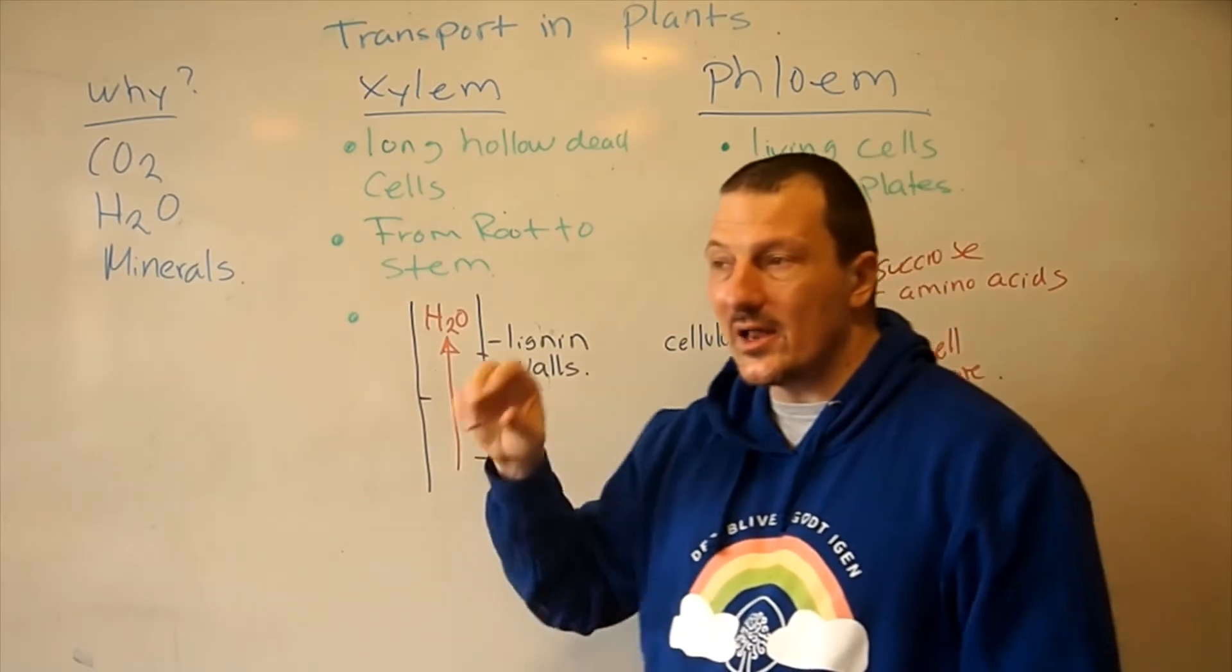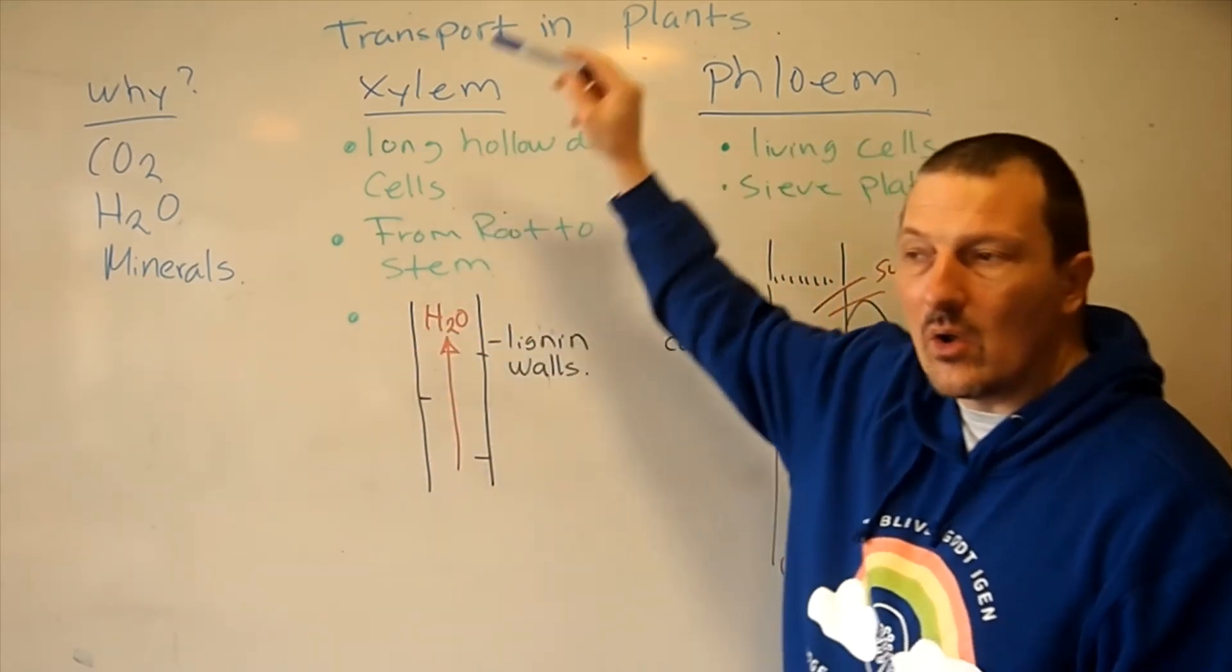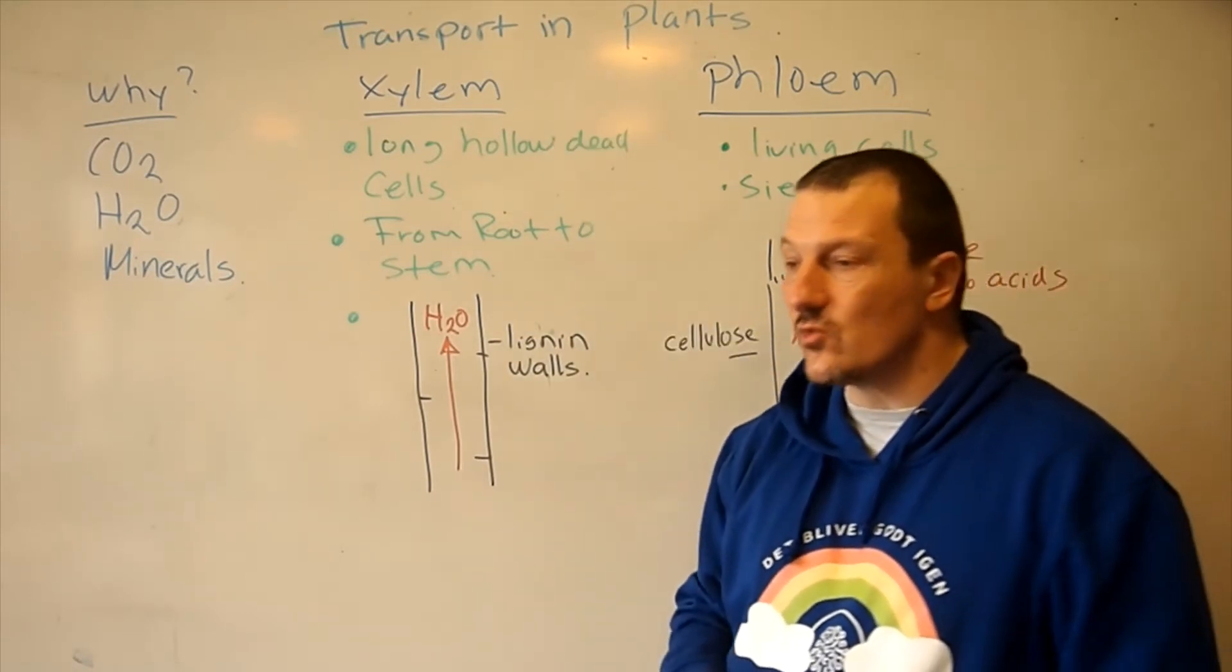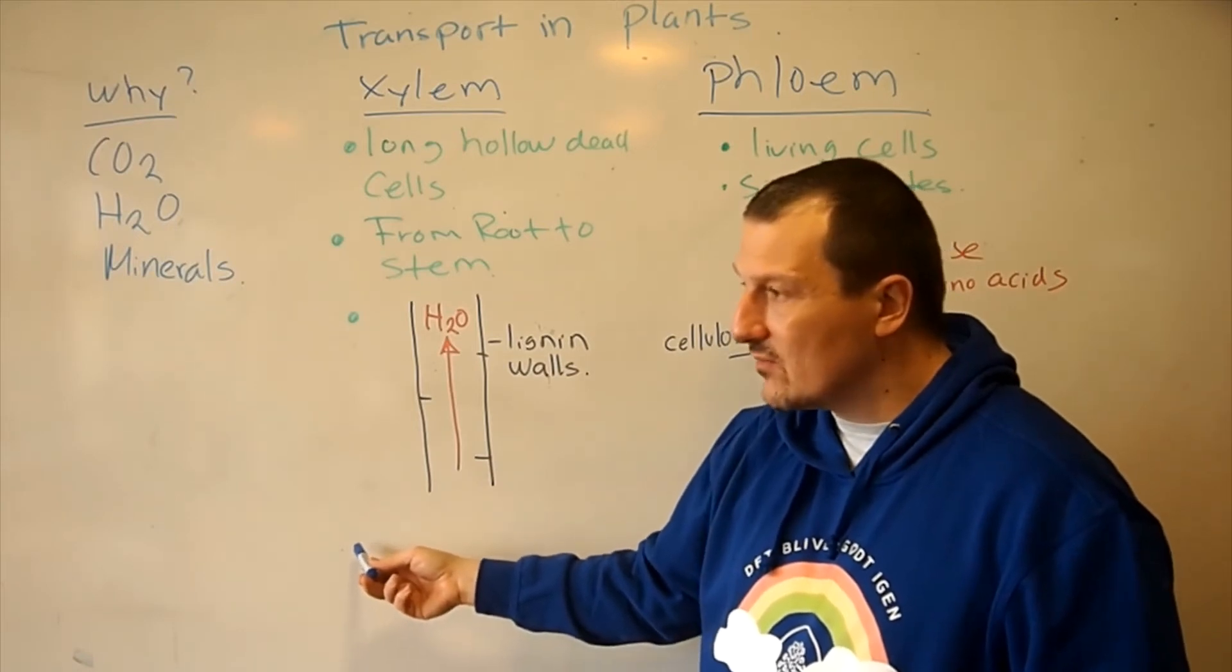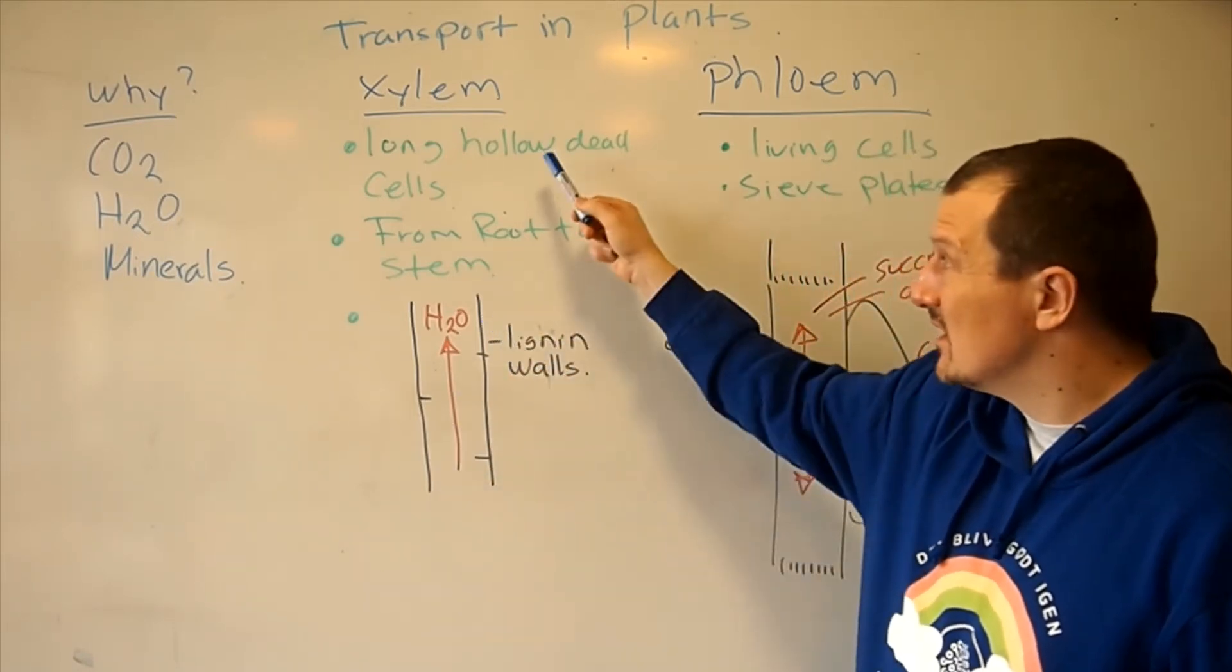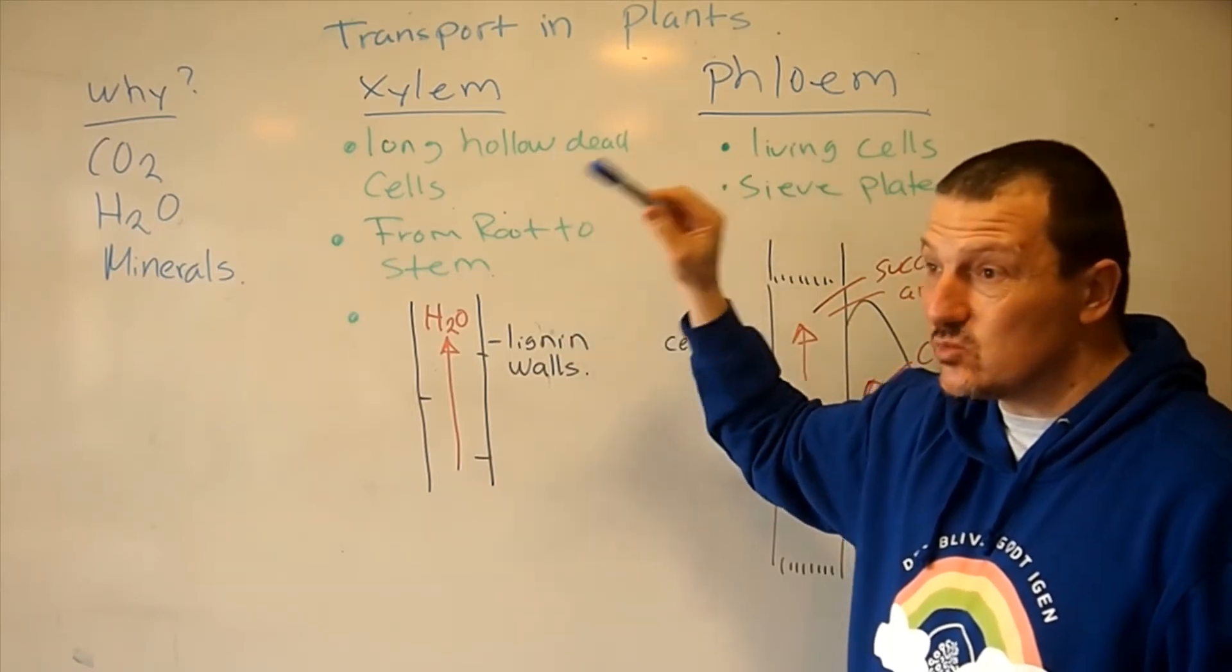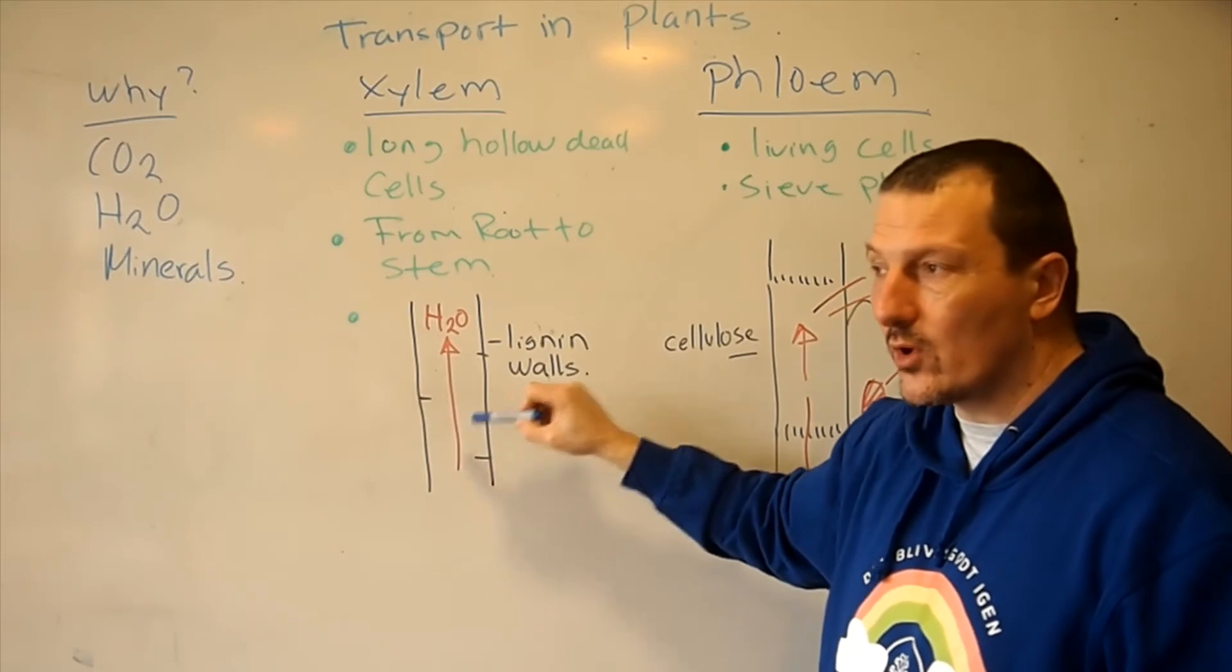So they are long and hard and they go all the way from the root all up into the leaves as one long straw, which means that they transport water only one way from the roots upwards. So it's dead cells, it's one long system, it transports water one way.